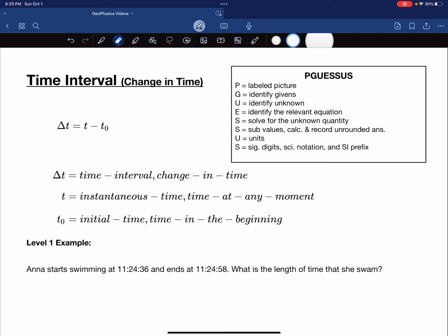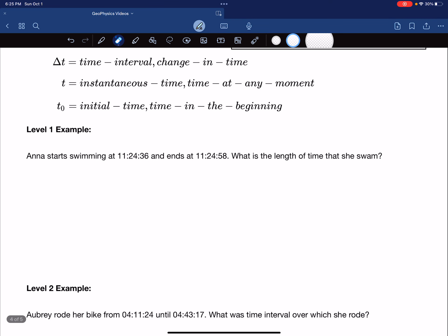So let's look at our first example, our level one example. We have Anna, and she's swimming. And these are the times involved when she starts. So this is actually something we can label as time zero. And then we see she ends at this time, a later instant in time, or t. And we want to know the length of time, and that length in time is the delta t.